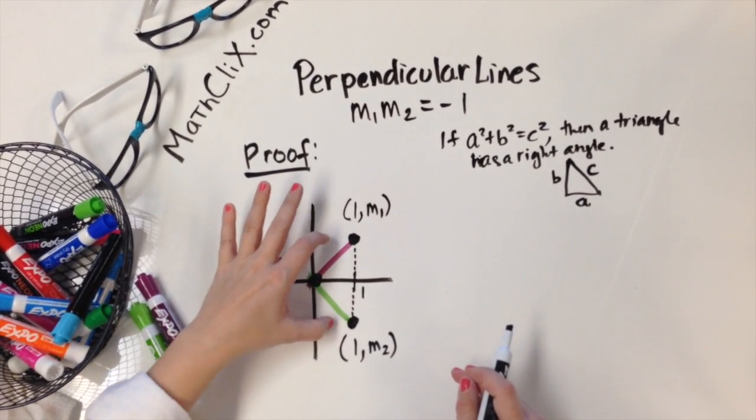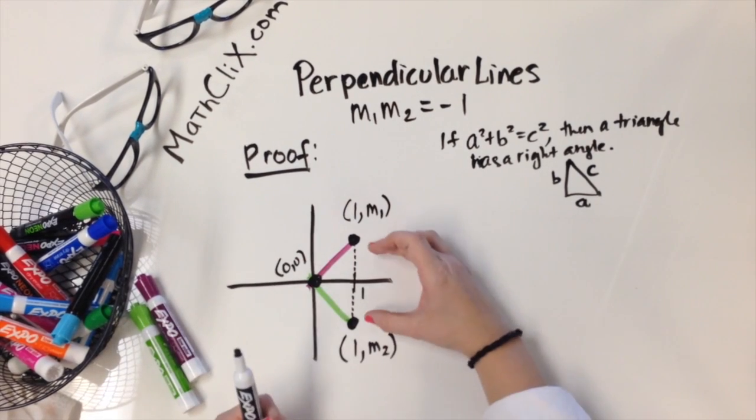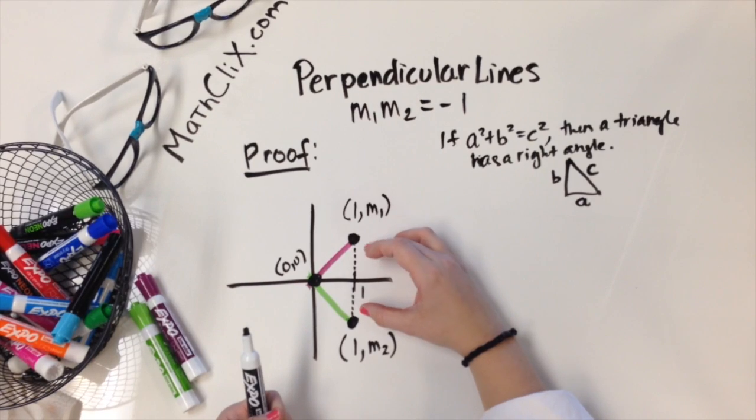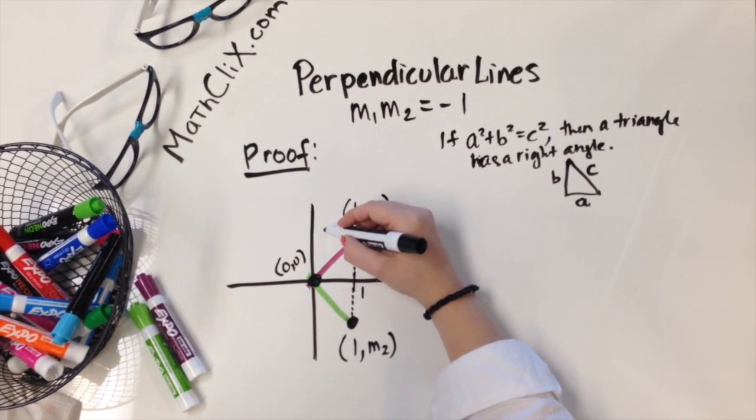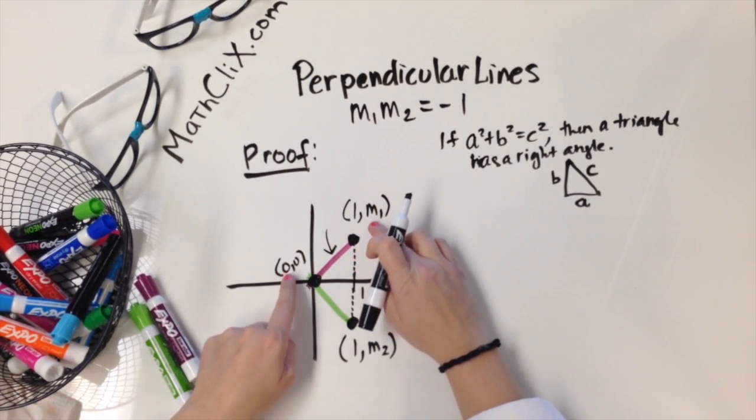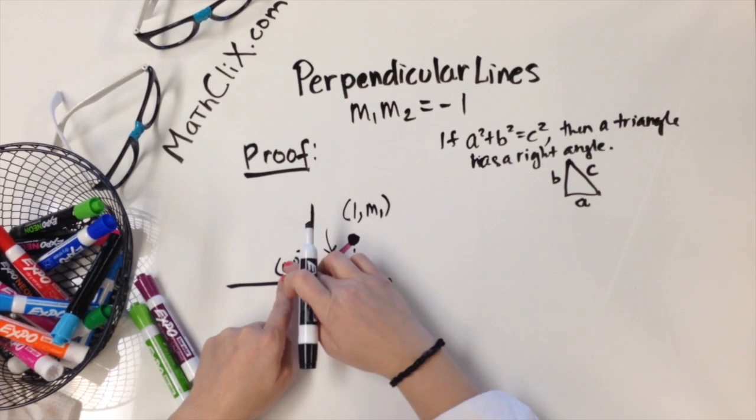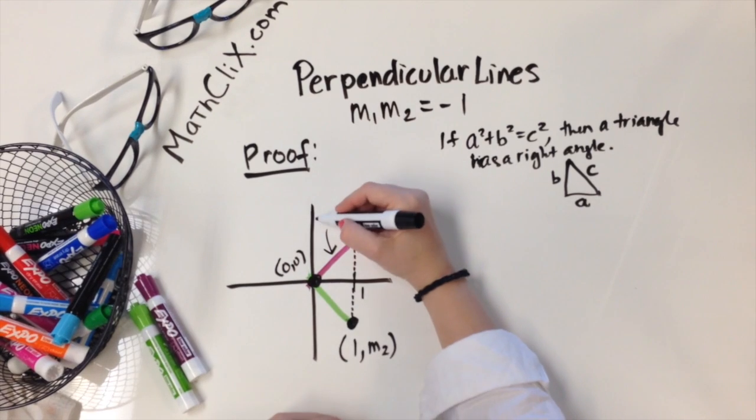So a and b would be the legs, and c would be where the hypotenuse would be. So this would be our a and our b, and we're going to show that when we square those lengths, that it's equal to the sum of this one squared. So we're going to start by calling this side, the length of this side would be the distance formula applied to these two coordinates. So √[(1 - 0)² + (m1 - 0)²].